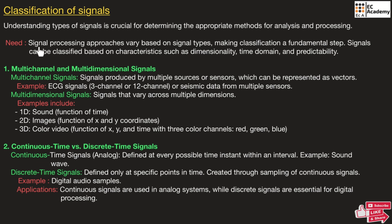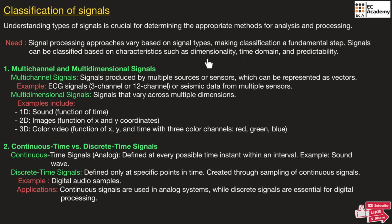To find what type of signal we are processing is the first step in signal processing. The signals can be classified based on characteristics such as dimensionality, time domain, and predictability.